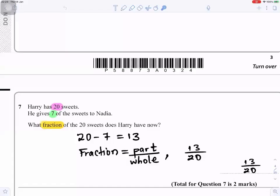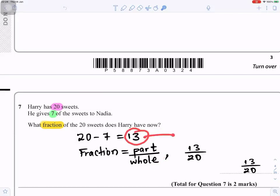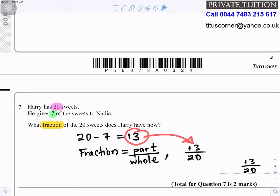Question seven: Harry has 20 sweets and gives seven to Nadia. 20 take away 7 is 13. A fraction is the part divided by the whole — 13 is left out of a whole of 20, so the answer is 13 over 20.